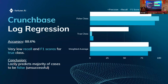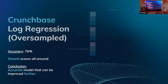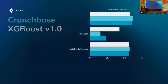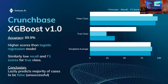Moving on to Crunchbase results, we first started with simple logistic regression, which had very high accuracy but very low Recall and F1 scores for the true class. We concluded the model lazily predicted the majority of cases to be false — basically predicting most companies to be unsuccessful. We then moved on to XGBoost, which had around 89% accuracy — higher than logistic regression — but had a similar problem with F1 score and Recall for the true class.